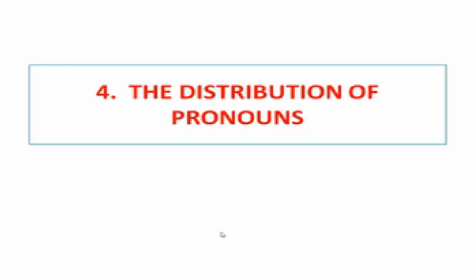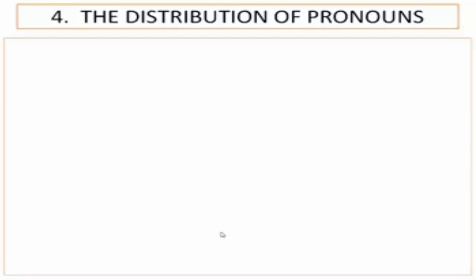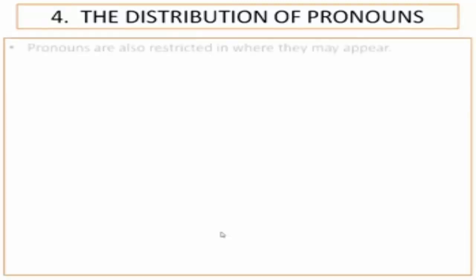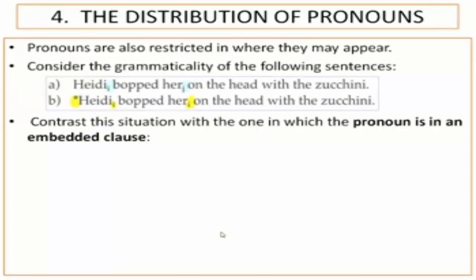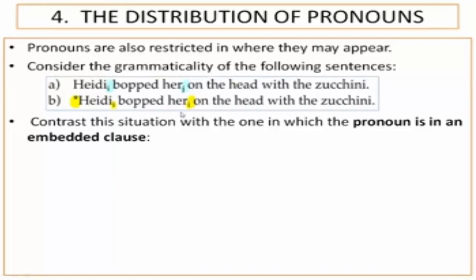So we already said that if 'he' refers to Omar, it means the pronoun and the antecedent are coindexed. And if it refers to somebody in the external world, they shouldn't be coindexed. Now, pronouns are also restricted in where they may appear. Consider the grammaticality of the following sentences: 'Heidi popped her.' Can anyone explain why sentence B is ungrammatical?